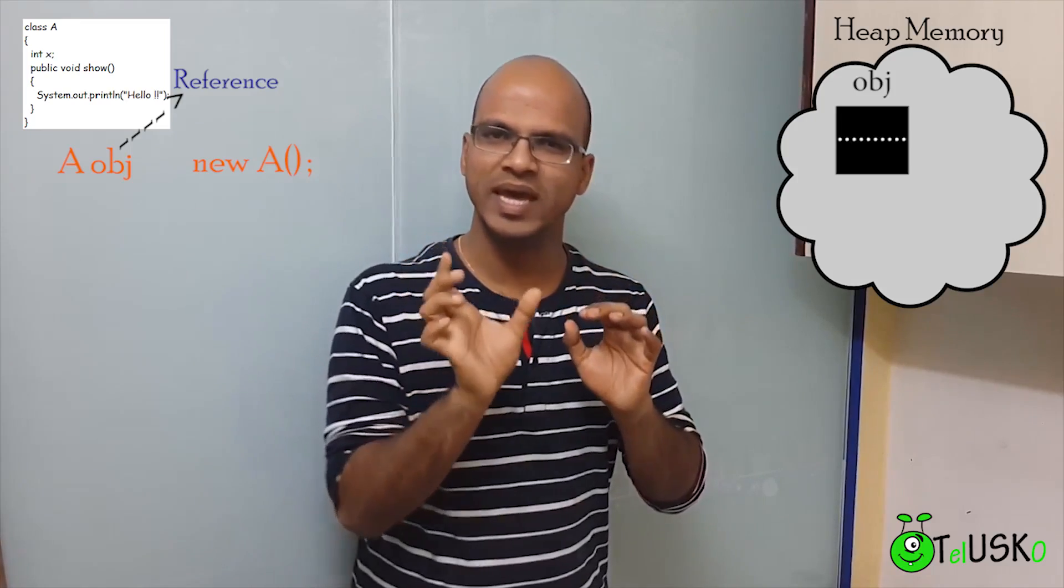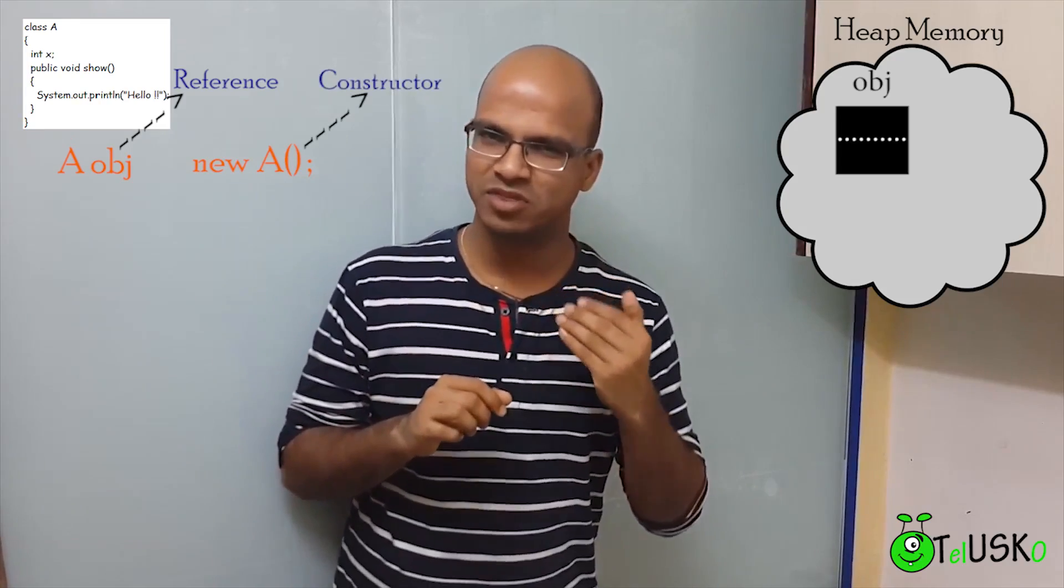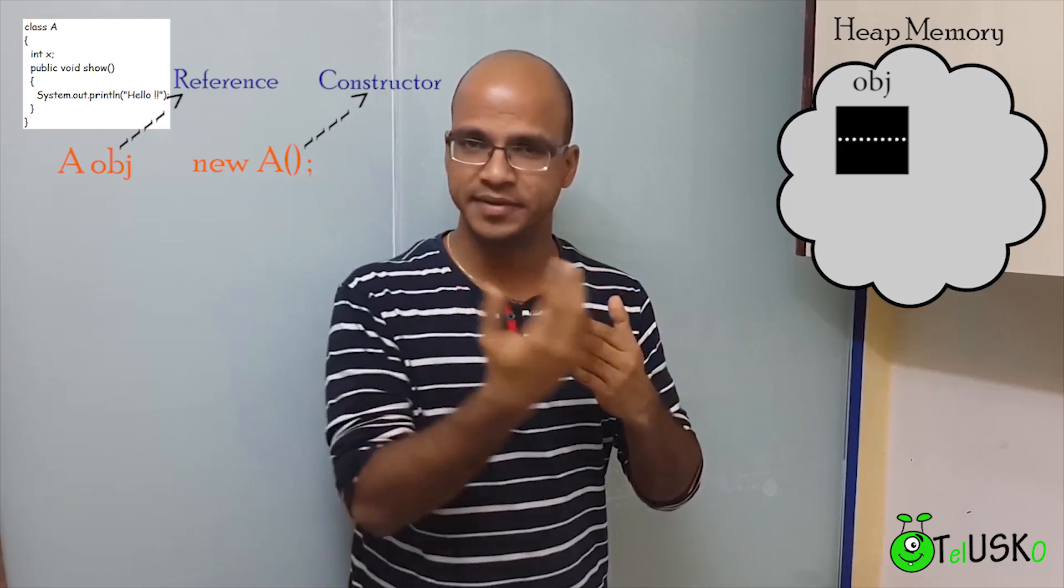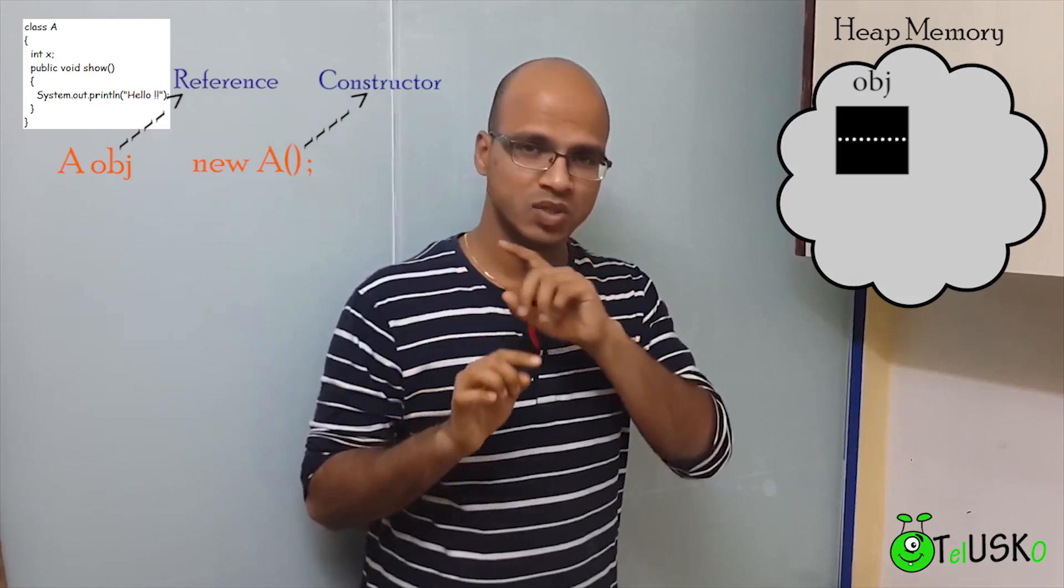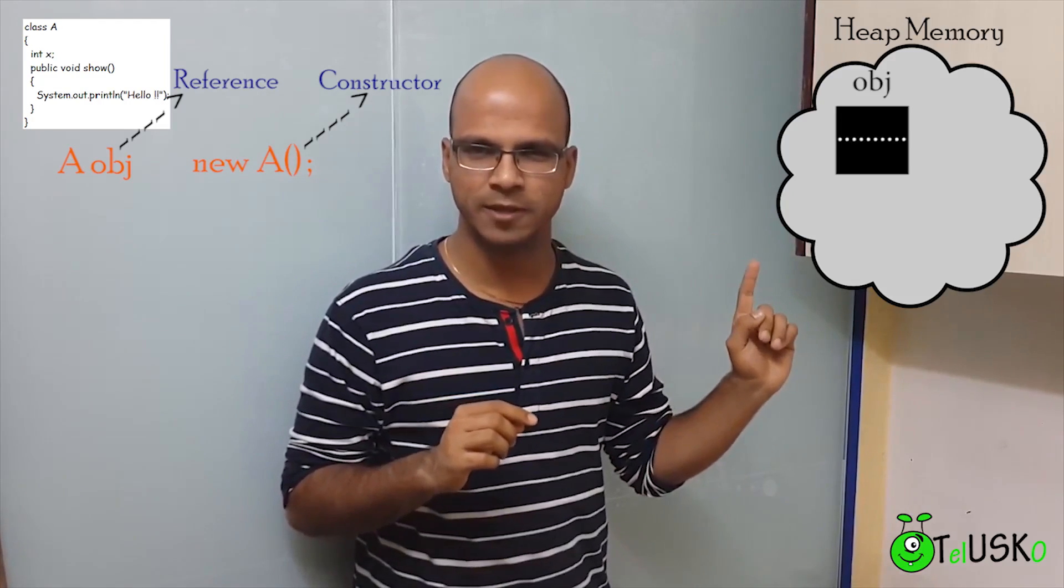Now that new A bracket, that A bracket is a constructor. It looks like a method, but it's a constructor. Again, what is a constructor? That we'll discuss in detail later. For now, let's focus: we have new A bracket. So that new A bracket will create an object inside heap memory.